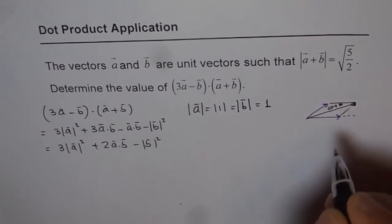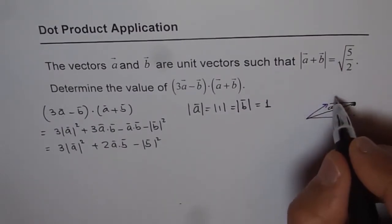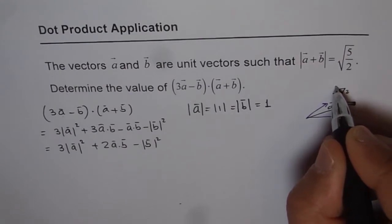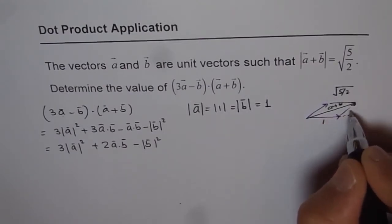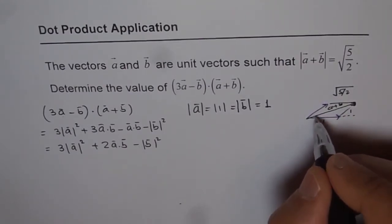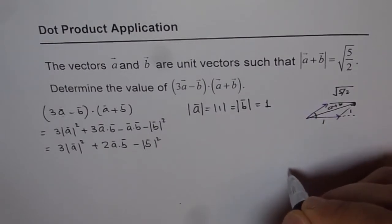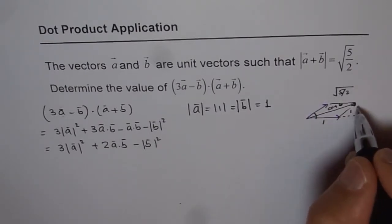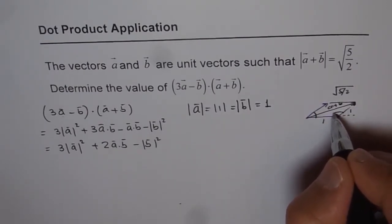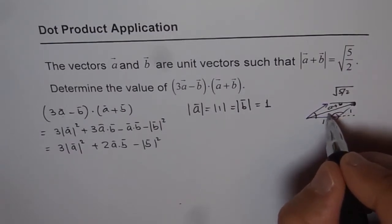Now, in this, we are given a plus b is equal to square root 5 over 2. This is 1, this is 1, this is 1, and that is the angle which we need to find in between. But from this triangle, we can find this angle. Let us say this angle is phi.